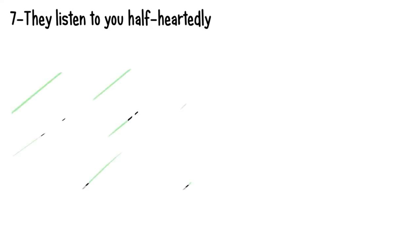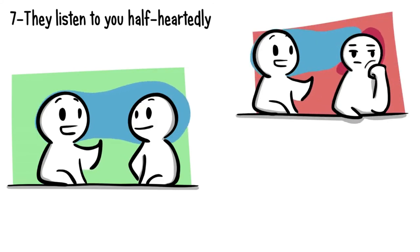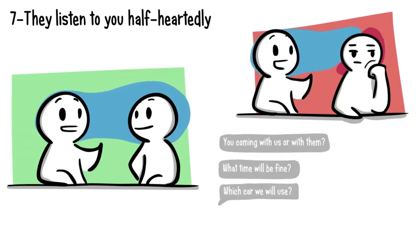Number seven, they listen to you half-heartedly. When we care about someone, we usually do our best to listen to what they say. But if someone is only listening to half of your story and zones out for the rest of it, it's clear they just aren't that invested in you. Other indicators include scanning over your messages, instead of fully reading them, giving you only half the answers you need.